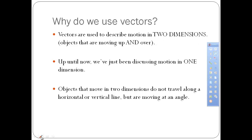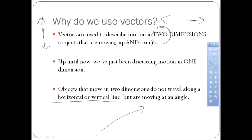We're going to use vectors in physics to describe motion that moves in two dimensions. So up until now we've just been concerned with things that either move left to right, or free-falling objects that go up and down. Objects that move in two dimensions are things that don't travel in a straight horizontal or vertical line, but they move at an angle — going over in the x direction as well as up or down in the y direction. So projectiles are the things we're going to be studying in this chapter, and vectors are going to help us describe their motion.